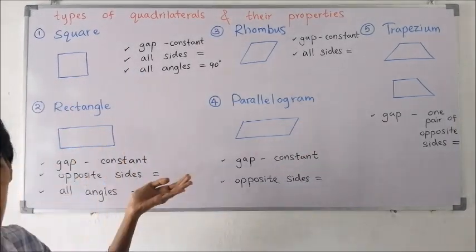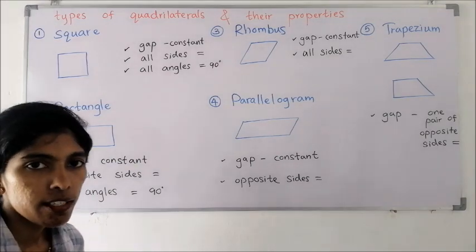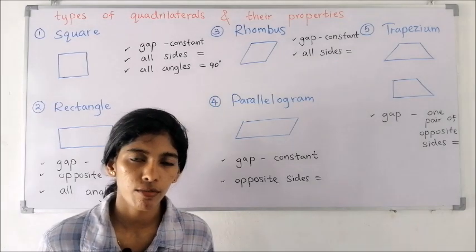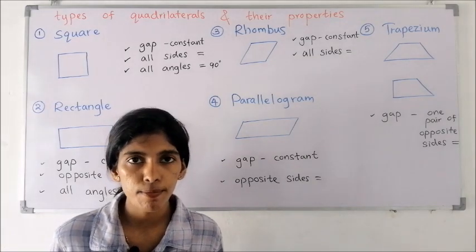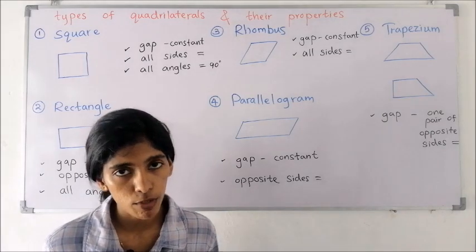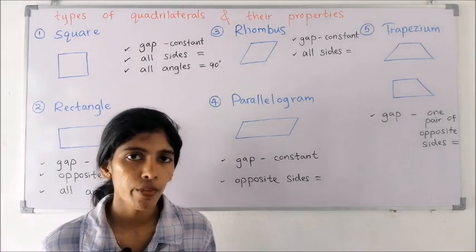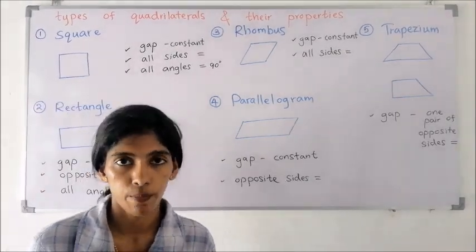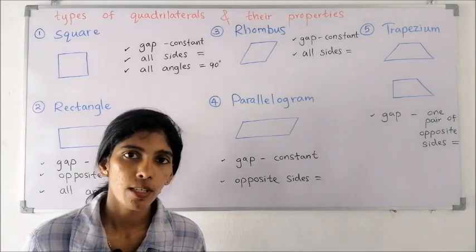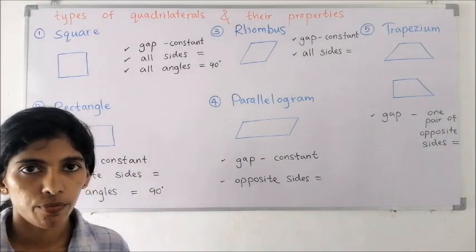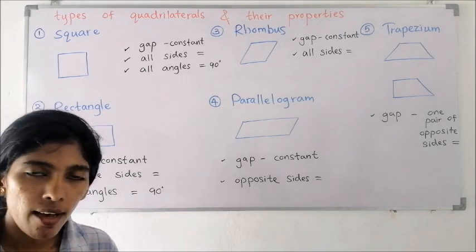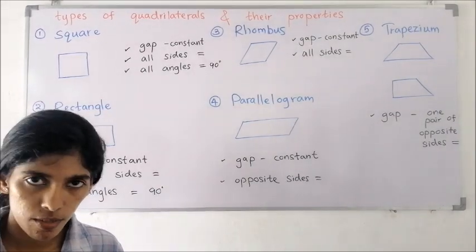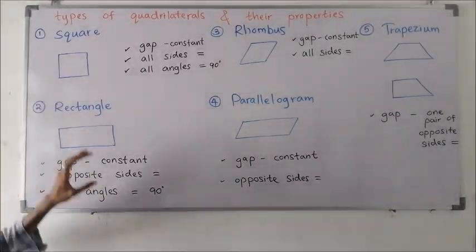Now we will learn about different types of quadrilaterals and their properties. If a four-sided rectilinear plane figure has no special features, it is called a quadrilateral in common. But if it has special features, we can give it a specific name. We can categorize quadrilaterals into five types: squares, rectangles, rhombuses, parallelograms, and trapeziums.